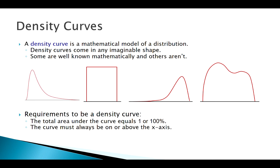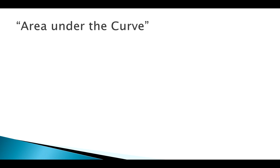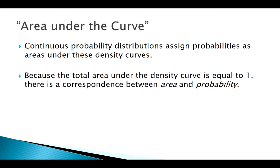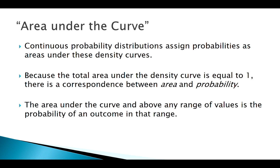We could use geometry for simple shapes — there's a triangular distribution — or more complicated math for curves. Either way, regardless of what our density curve looks like, the area has to add up to one, and we picture probabilities as the area under the curve. There's a direct relationship between the area under that curve and the probabilities of certain intervals. We picture the overall scenario as the density curve and probabilities as areas under that curve.